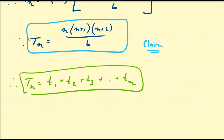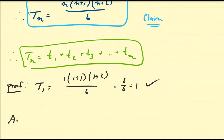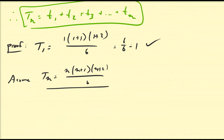Let's prove this claim. For the base case T1: 1 times 2 times 3 over 6 equals 6 over 6 equals 1. That checks out. We assume TN equals n times n plus 1 times n plus 2 over 6, and our goal is to prove T(n+1) equals n plus 1 times n plus 2 times n plus 3 over 6.